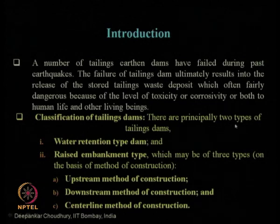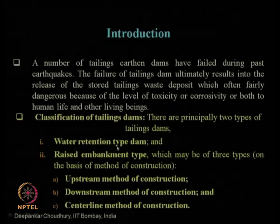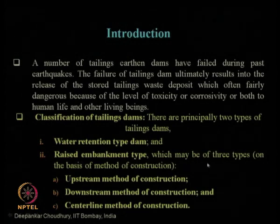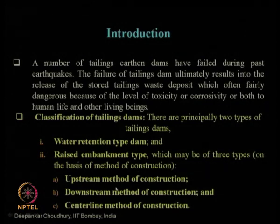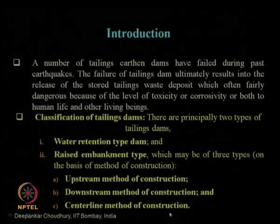Classification of tailing dams: there are two major types — water retention type dam and raised embankment type. Raised embankment type tailing dams are constructed in three ways: upstream method of construction, downstream method of construction, and center line method of construction. The most commonly used are upstream and downstream methods.